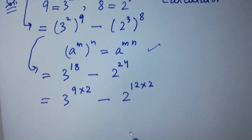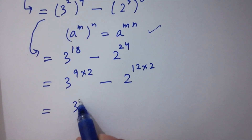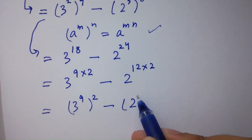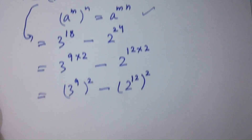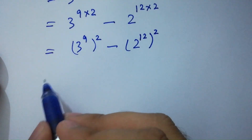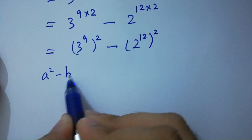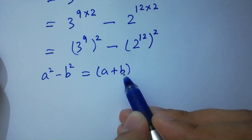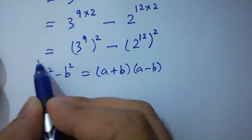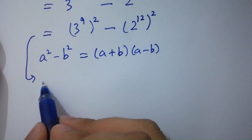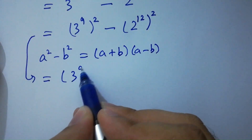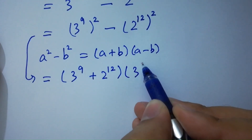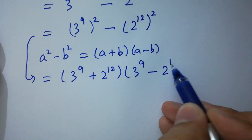We can rewrite this as (3^9)² minus (2^12)². Now we can use the difference of squares formula: a² minus b² equals (a plus b)(a minus b). So we get (3^9 plus 2^12)(3^9 minus 2^12).